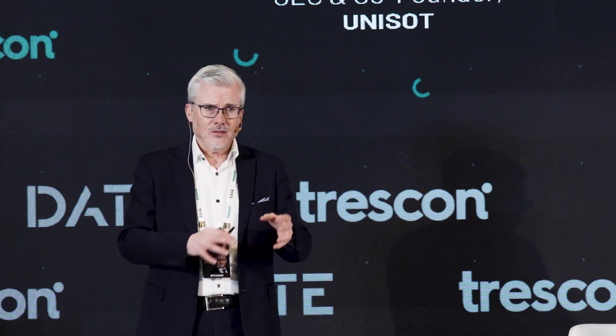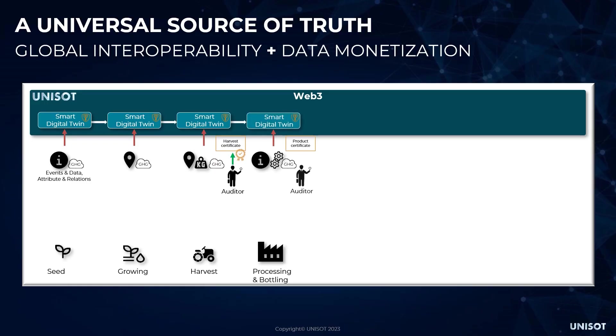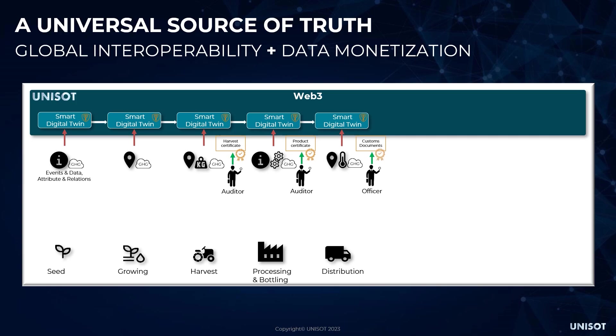We can make it very efficient for an auditor to verify information — they don't have to visit five different companies and ten different systems; they can go into the system, verify the information, and make a digital signature on the certificate. We can follow the product through production, split batches or merge different ingredients together, create product certificates, handle customs documentation like bills of lading and invoices, and follow the product all the way to the end consumer.